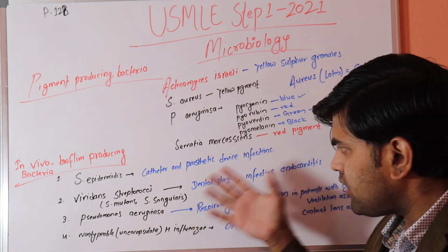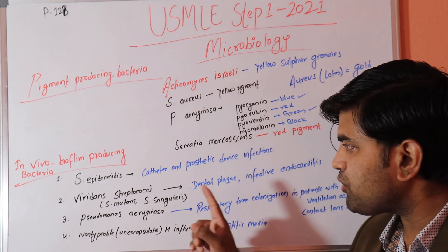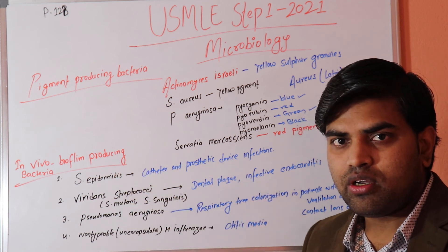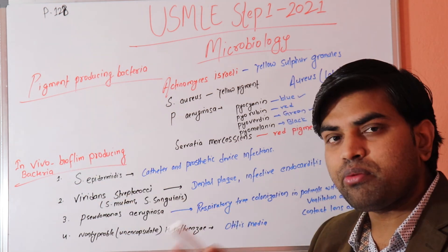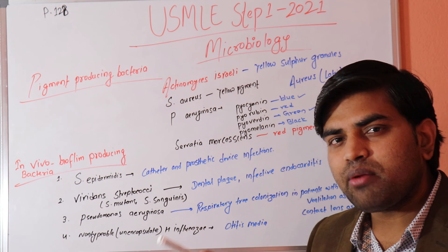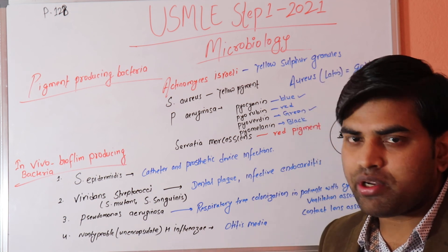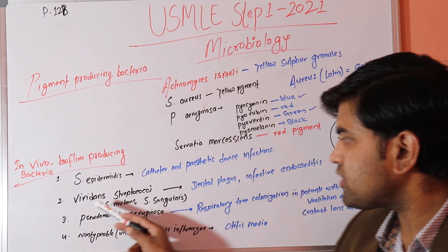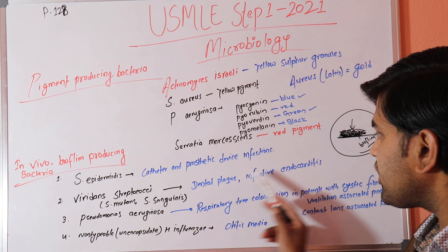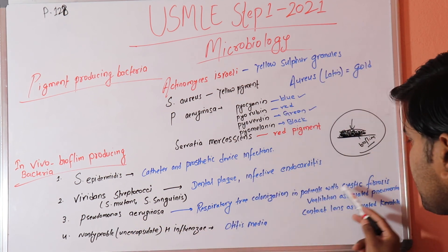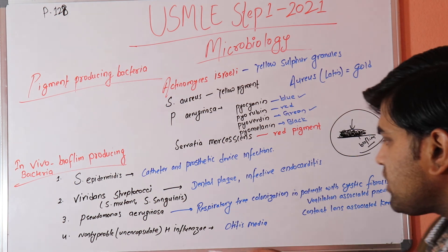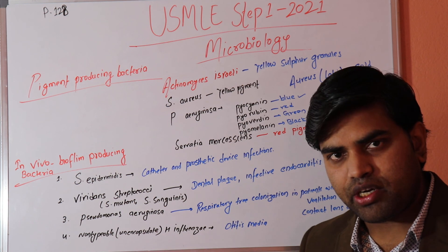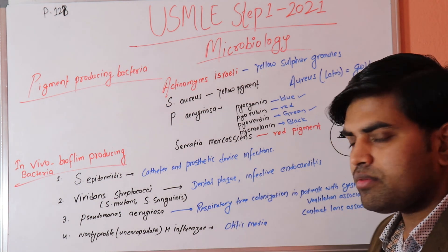In summary for this lecture, remember the biofilm-producing organisms and their associated sites: Staph epidermidis — catheters and prosthetic devices; viridans streptococci — dental plaque and infective endocarditis; Pseudomonas aeruginosa — cystic fibrosis, ventilator-associated pneumonia, and contact lens keratitis; non-typeable H. influenzae — otitis media. Biofilm is a major hospital-acquired infection concern worldwide.